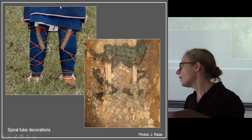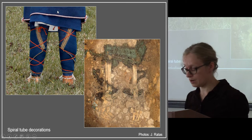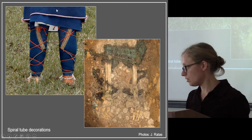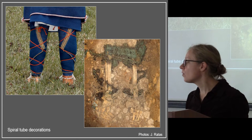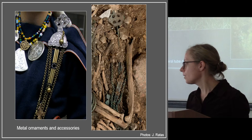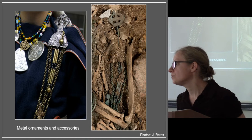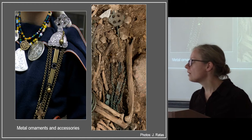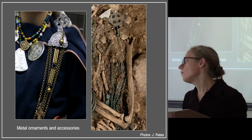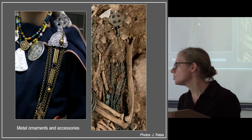Also the leg wrappings were adorned in this way. The second important part of the costume are ornaments — metal ornaments and accessories. One of the main parts was chains, breast chains with needles and with chain holders.